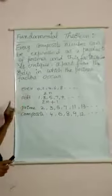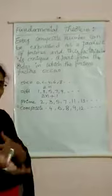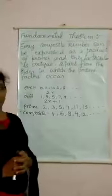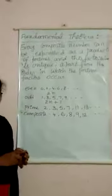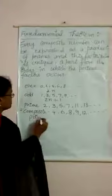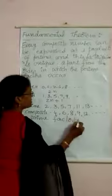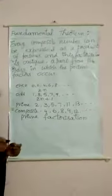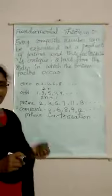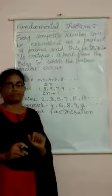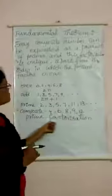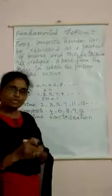So, even numbers, odd numbers, prime numbers, and composite numbers are types of numbers you learned in previous classes. Today we are going to learn about the Fundamental Theorem of Arithmetic, but before that theorem, you have to know prime factorization. Prime factorization means writing a number as the product of prime numbers.